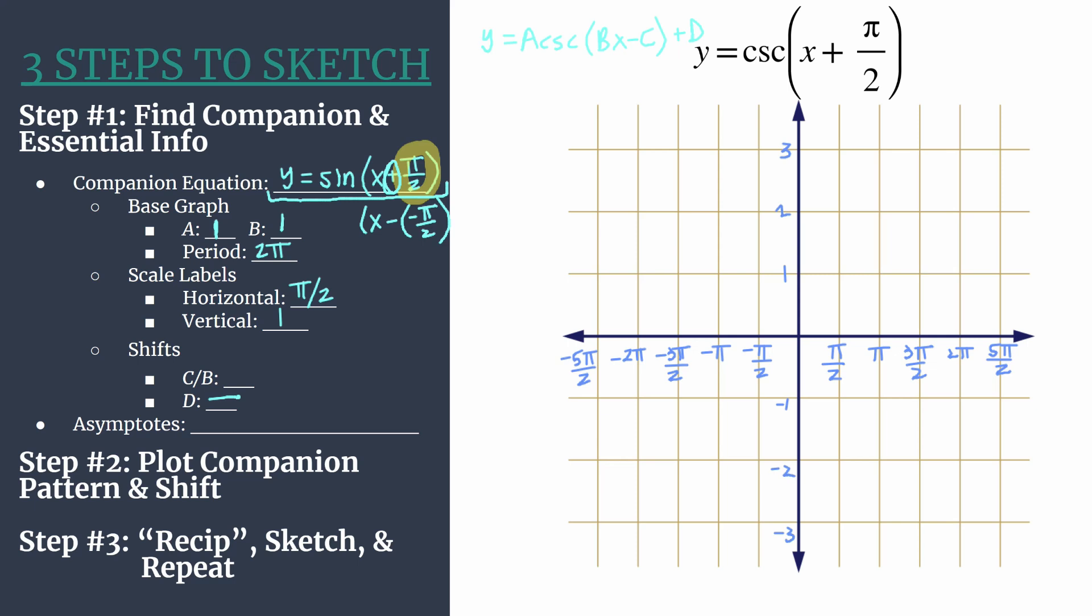So C over B, that's the phase shift. We have negative pi over two over one. So our shift here for our horizontal shift is just left pi over two. So you can write negative pi over two, maybe write yourself a reminder. We should be moving that companion graph left in the next step.